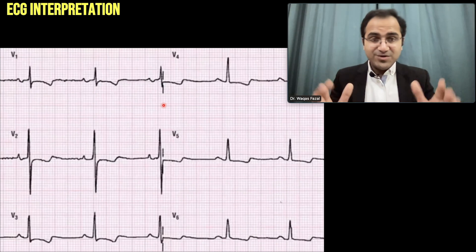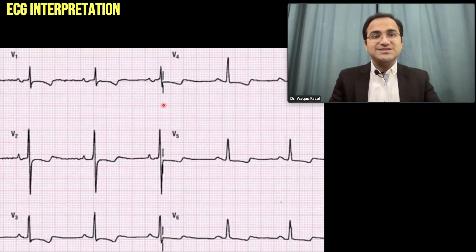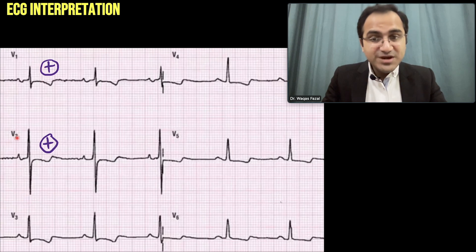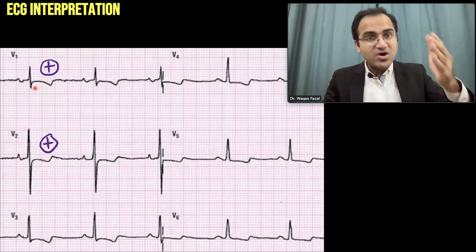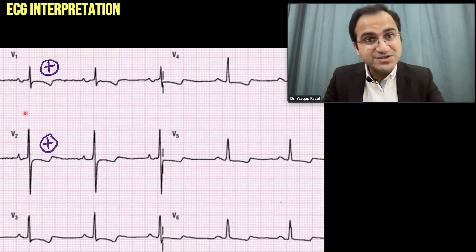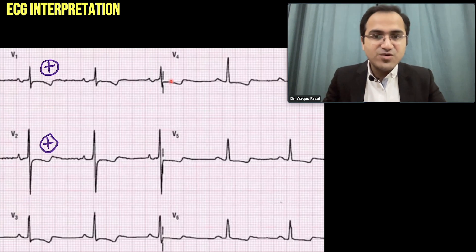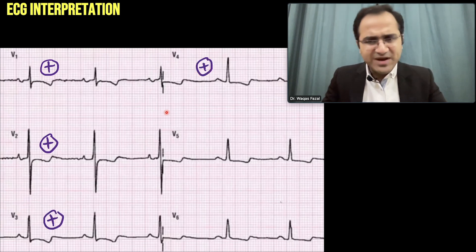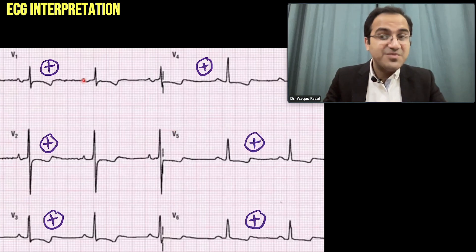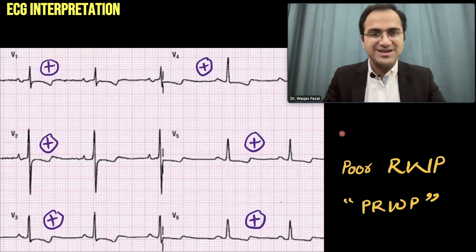Pause the video and assess the R wave progression in this ECG. Looking at the answer: V1 is positively deflected and V2 is also positively deflected — these should be negatively deflected. The normal V1 and V2 should be negative, but they are positive, which is abnormal. V3 and V4 are both positive, which is acceptable. V5 and V6 are positively deflected, which is normal. But since V1 and V2 should be negative, this is a poor R wave progression in the precordial leads.